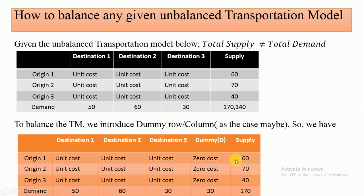Now we have a balanced transportation model. More importantly, do not forget: whenever you introduce a dummy row or dummy column, your unit cost will be zero. Take note — your unit cost will be zero whenever you introduce a dummy row or dummy column.